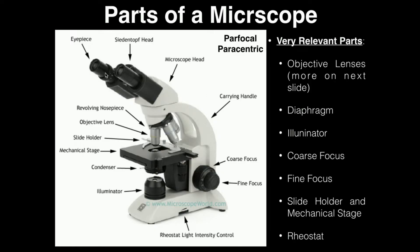Here is a microscope very similar to the one that you're going to be using in class. There are a few structural differences, but overall the functionality is the same. This is going to be a compound light microscope, and there are a few properties I want to go over for this type of microscope, and then we'll go into some of the relevant parts.